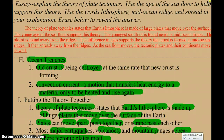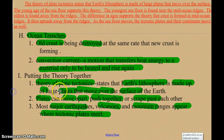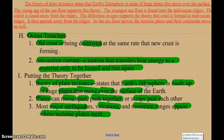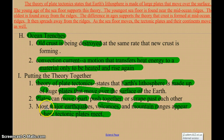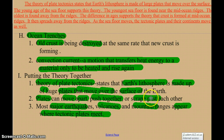When you put the theory all together, the theory of plate tectonics states that the Earth's lithosphere — which is the top layer of hard, solid rock — is made up of huge plates that float over the top of the surface of the Earth, floating on the mantle. Plates move apart, push together, and scrape past each other. That's what we'll talk about in the next section.